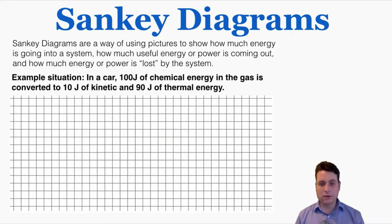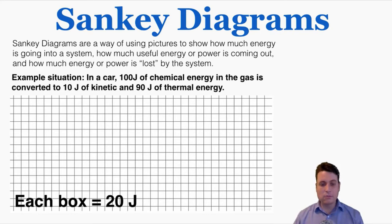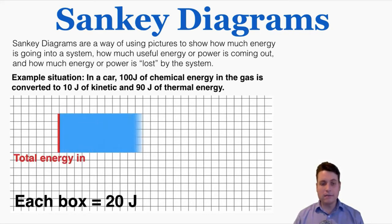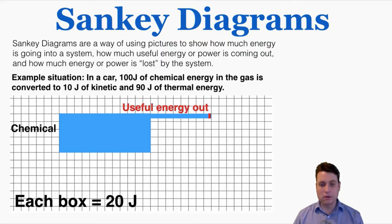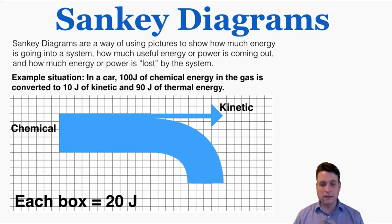Here's another situation with a car. This time the car is taking in 100 joules of chemical energy and changing it to just 10 joules of kinetic energy and 90 joules of thermal. Each box is still 20 joules, so the rectangle is still five boxes high with chemical energy going in. This time only 10 joules is being turned into kinetic, which is just one half of one box in height — that's the useful energy out. The other four and a half boxes, or 90 joules, is all being lost to thermal energy, exactly four and a half boxes high to represent 90 joules.